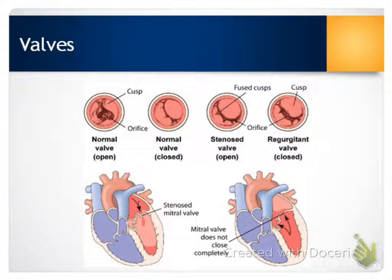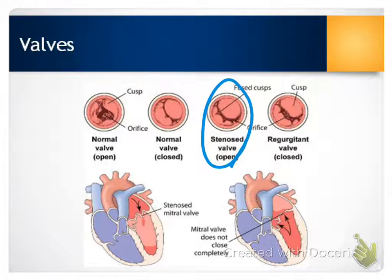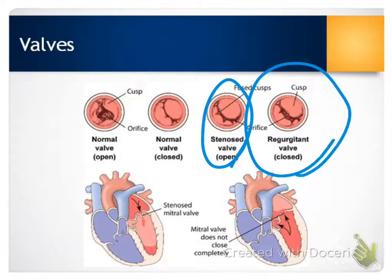Looking at some images of valves, a normal valve opens and closes properly. If the valve is stenosed, the valve orifice is restricted and forward blood flow is impeded. When we have regurgitation, there is incomplete closure of the valve leaflets, and this results in a backflow of blood.